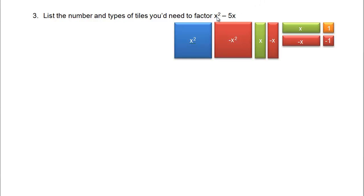To factor x squared minus 5x, we would need an x squared tile and 5 negative x tiles.